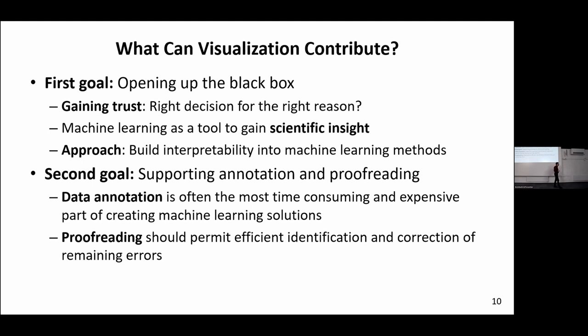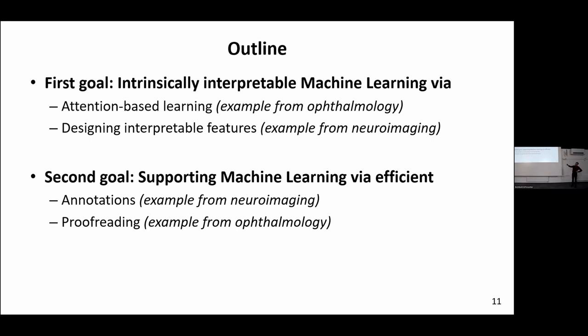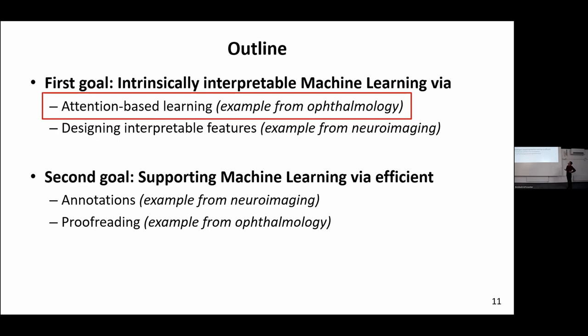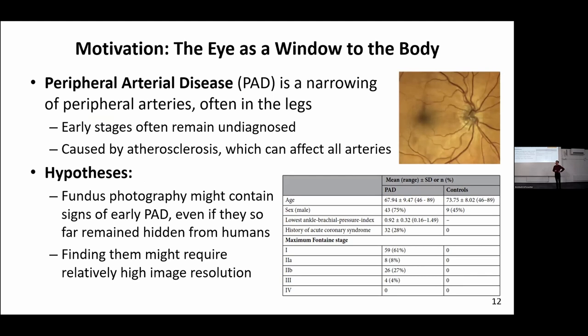The main part of my talk goes through a couple of examples for these challenges, structured according to these two basic goals. Let's first look at the interpretation issue — how can we tell why a network is making a specific decision? The first example deals with ophthalmology, specifically peripheral arterial disease, which affects mostly the legs. What does this have to do with the eye?